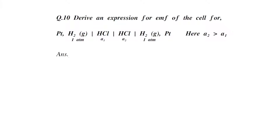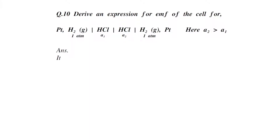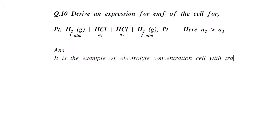The second HCl solution has activity a2, which is in contact with hydrogen gas at one atmospheric pressure, and for the electrical contact there is a platinum wire. Here a2 is greater than a1. It is an example of an electrolyte concentration cell with transference.